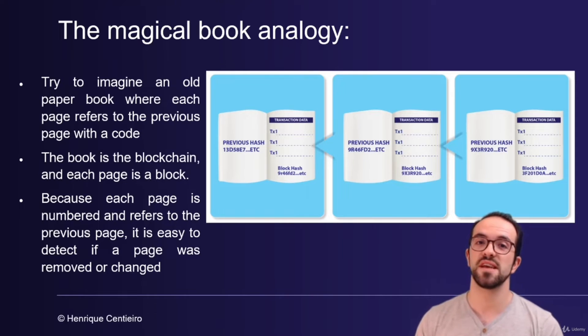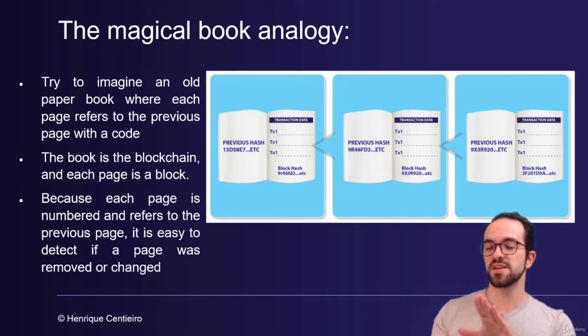Transactions and data is usually grouped together in blocks. And these blocks are connected between each other with hash values. Hence the name blockchain. You can see like these blocks are pages in the book, like we can see here, that are connected between each other.